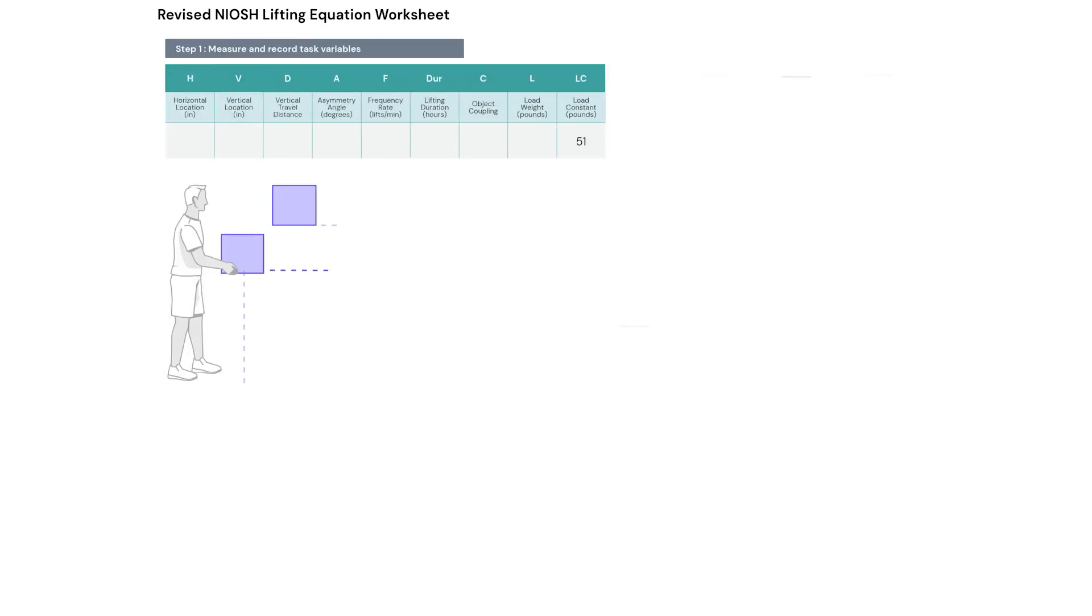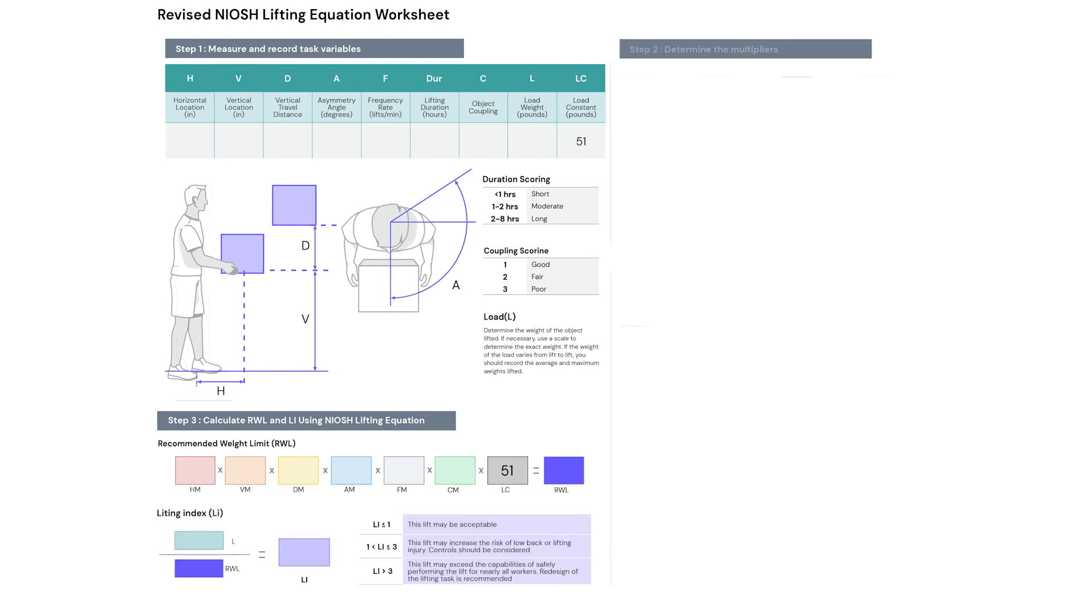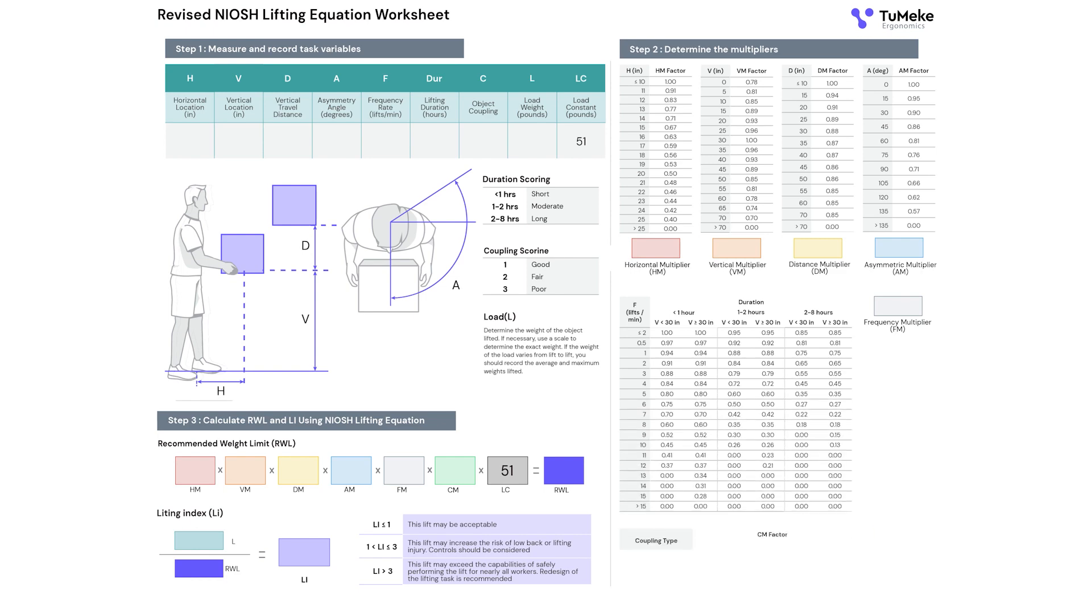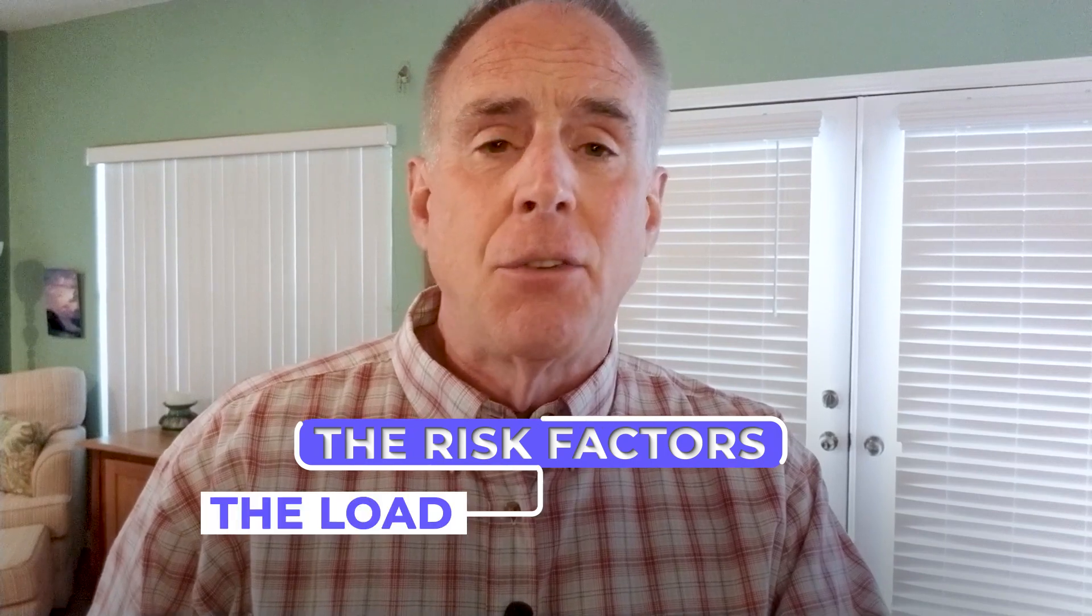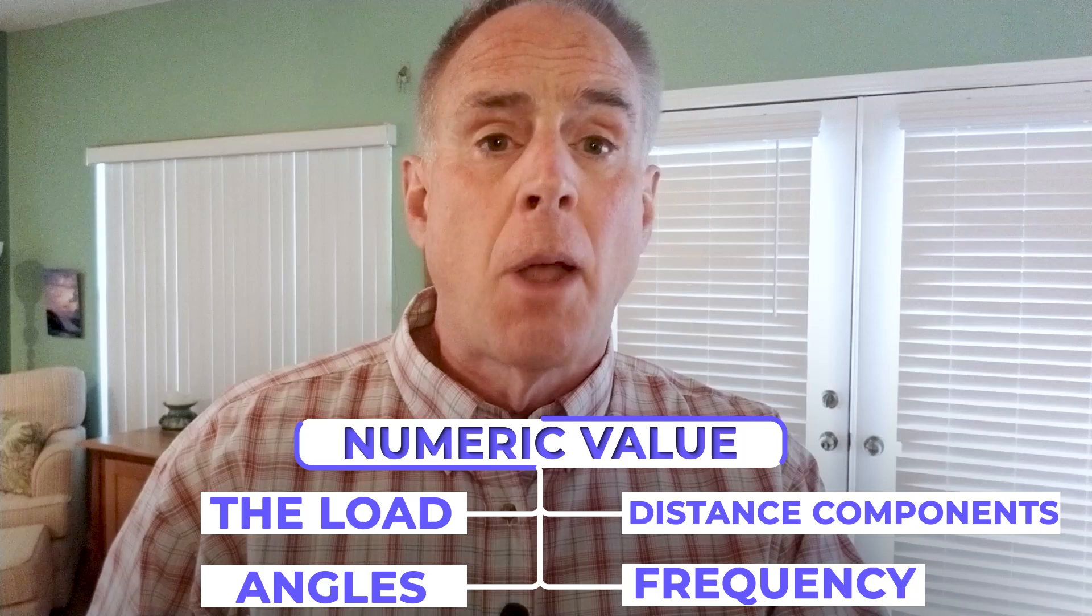The revised NIOSH lifting equation is designed to arrive at a recommended weight limit for a lifting task. The recommended weight limit represents the weight that most healthy workers can handle without an injury. The formula for the recommended weight limit calculation employs a numerical model. The risk factors including the load, the distance components, the angles, and frequency are each given a numeric value.